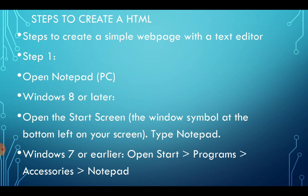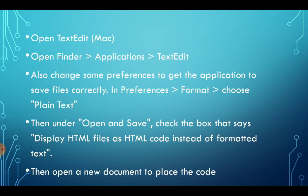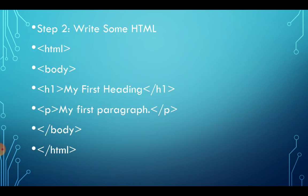Type 'Notepad'. If you have Windows 7 or earlier, go to Start, Programs, Accessories, Notepad. For Mac, use TextEdit — open Finder, Applications, and TextEdit. Change some preferences so the application saves files correctly: in Preferences, choose Format, then Plain Text. Under Open and Save, check the box that says 'Display HTML files as HTML code instead of formatted text.' Then open a new document and write your HTML, beginning with the html and body tags.